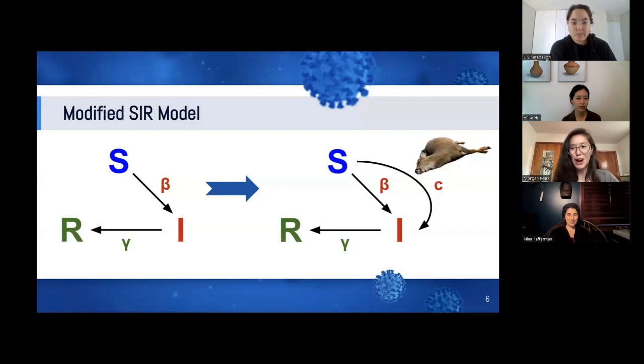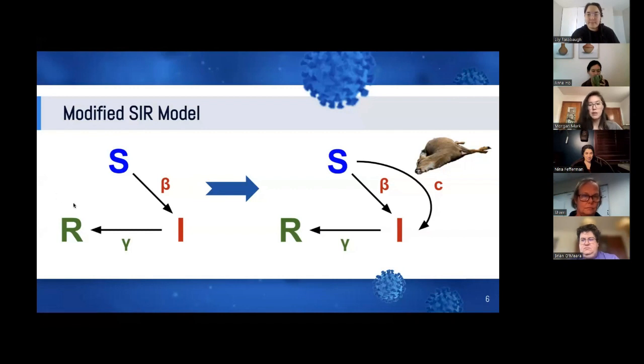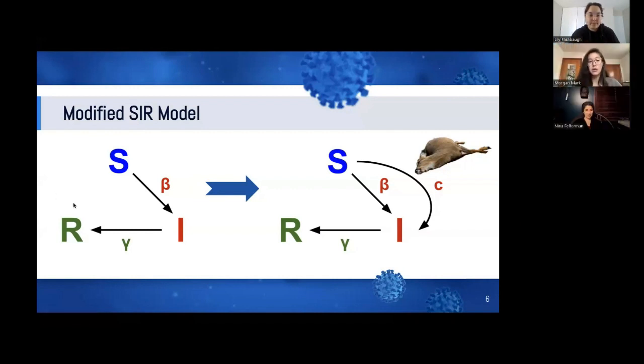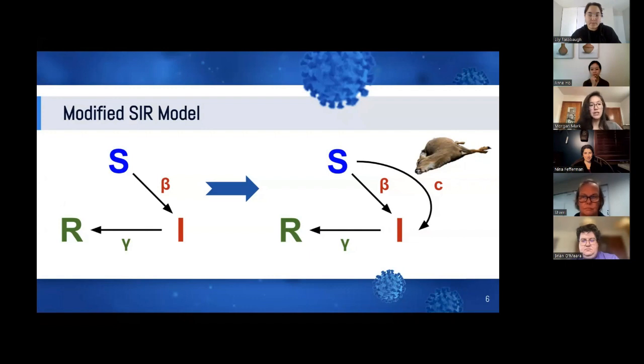Just graphically showing what that looks like, on the left here is our standard SIR model. Susceptible individuals can become infected, and then infected individuals can become recovered. But this is all happening within a population of the same species. When we account for scavenging, we have dead carcasses in the equation now, which can act as an additional mechanism of infection, converting susceptible scavenger individuals to infected individuals. It's interesting to see how this dynamic, where we incorporate carcasses now, can affect typical SIR dynamics.